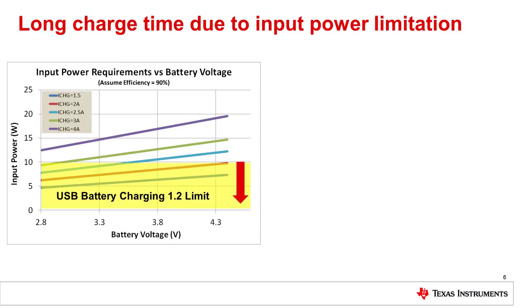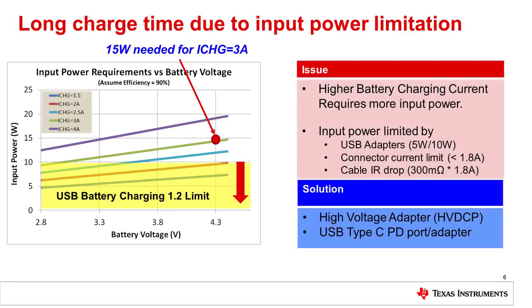Another reason for long charge time is simply having too weak a power supply to provide both the charge current and the system current you need. For a 3 amp charge current into a 4.2 volt lithium-ion battery, the input power supply needs to provide at least 15 watts assuming approximately 90% charger efficiency. In that case it may be desirable to use a high-voltage adapter or a new USB Type-C PD port that can provide higher than 5 volt output and several amps of current, so the charger can provide higher charge current as well as system current.